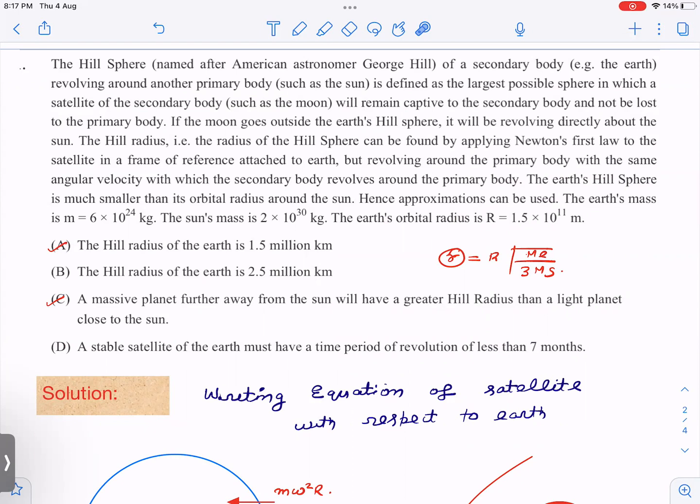The question is about the Hill sphere of a secondary body, which is Earth, revolving around the primary body, the sun. It is defined as the largest possible sphere in which a satellite of the secondary body, such as the moon, will remain captive to the secondary body and not be lost to the primary body.